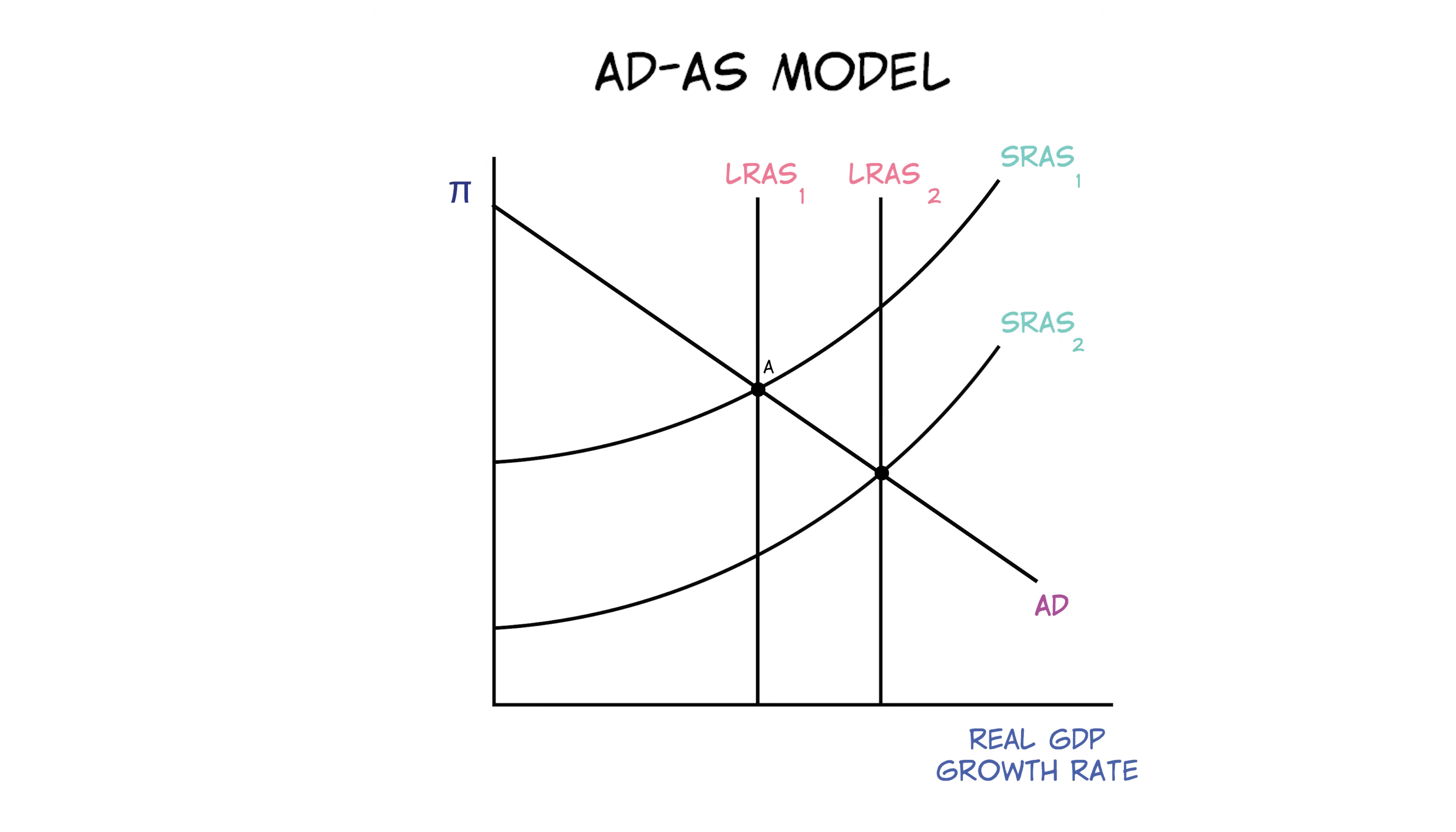When the government cuts spending, velocity growth decreases, and this shifts the AD curve to the left. The net effect of both shocks is lower inflation, but it's unclear if real GDP is higher or lower. Cutting spending reduces real GDP growth, and good weather increases it.